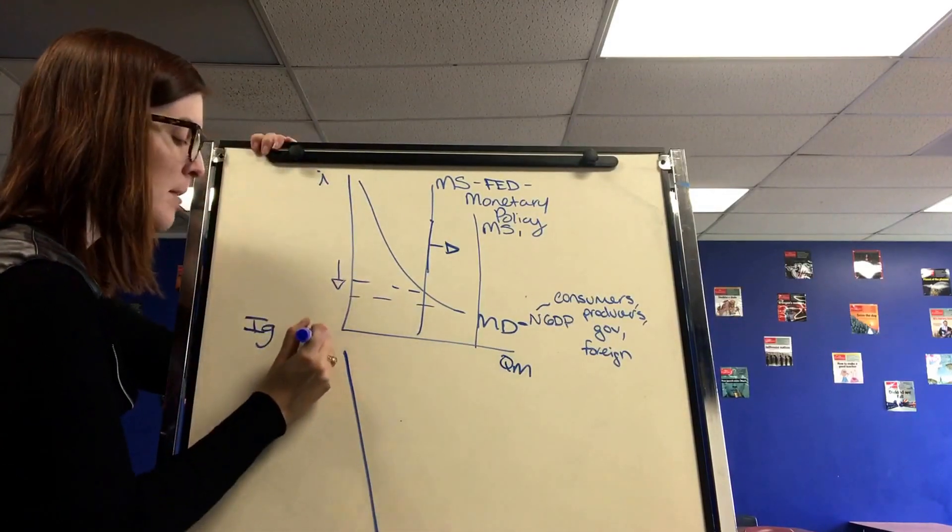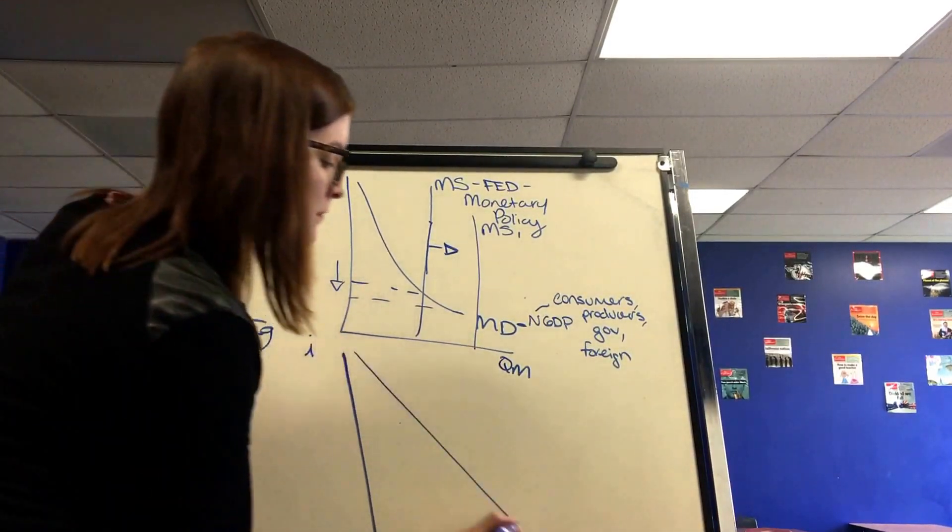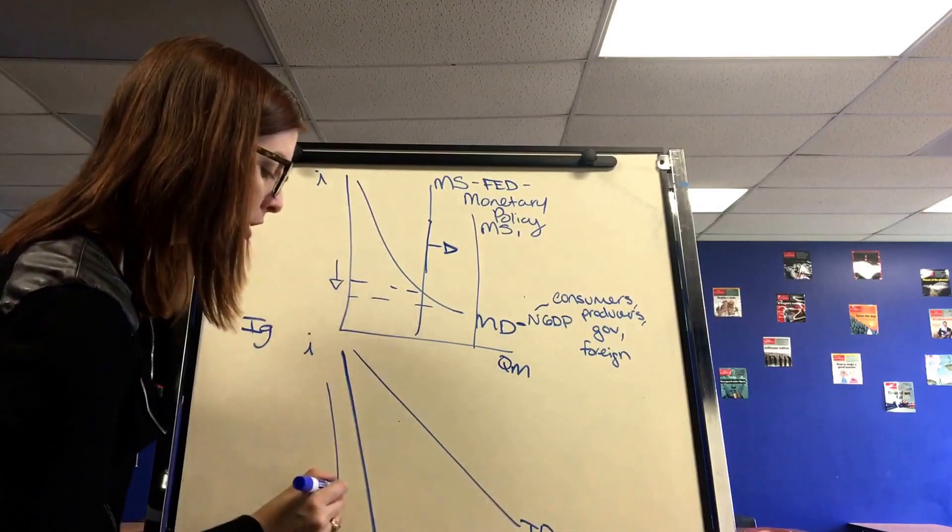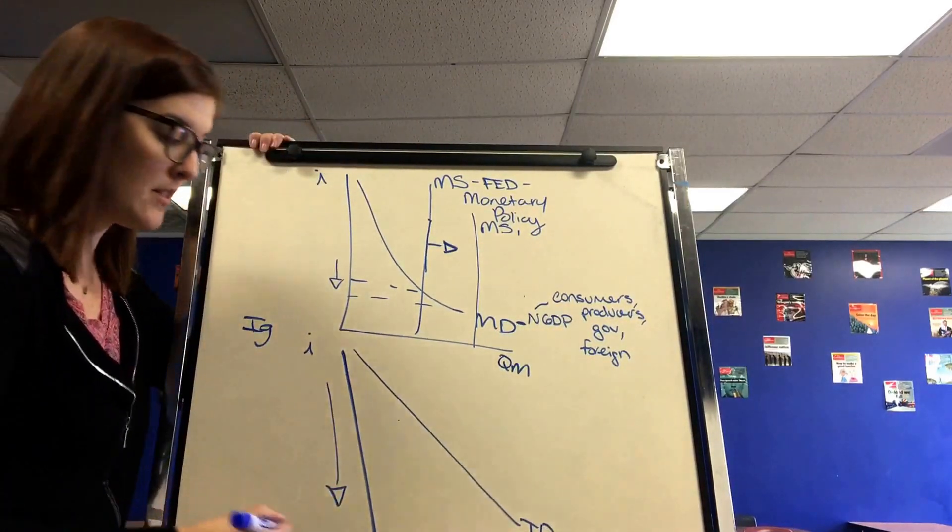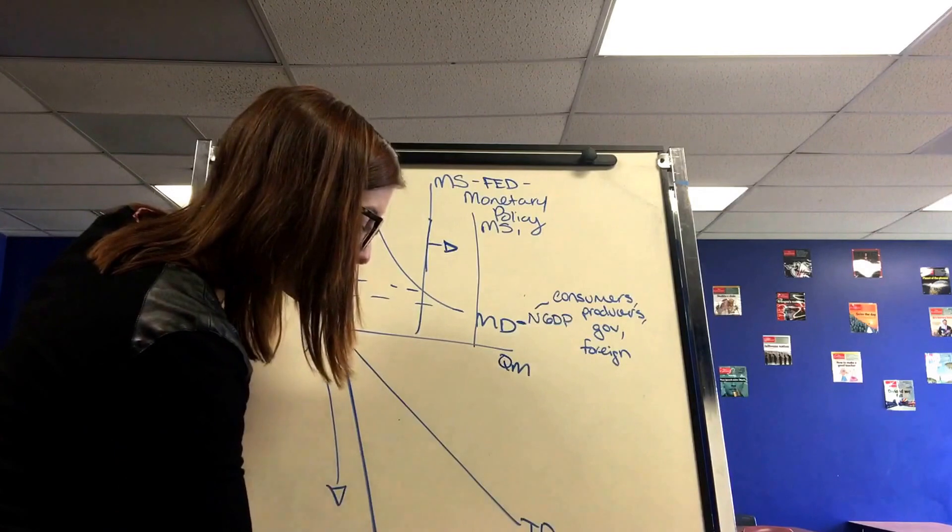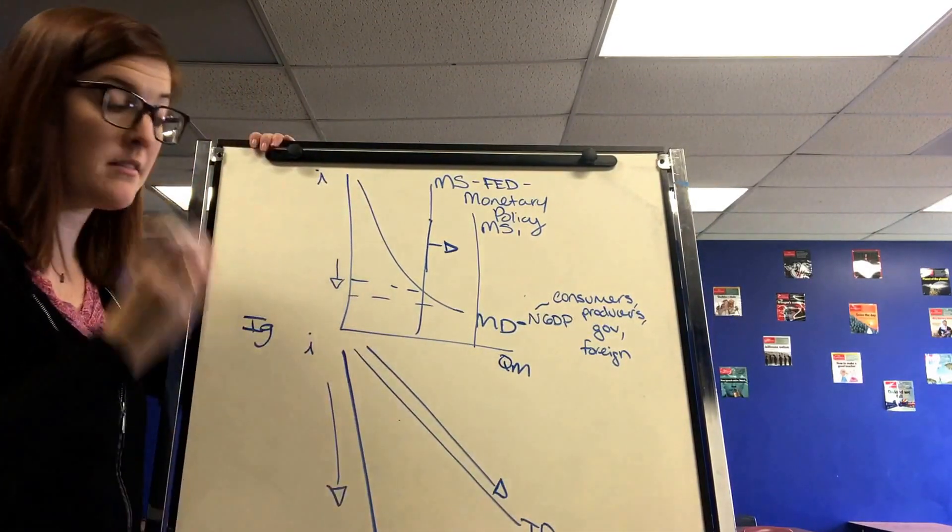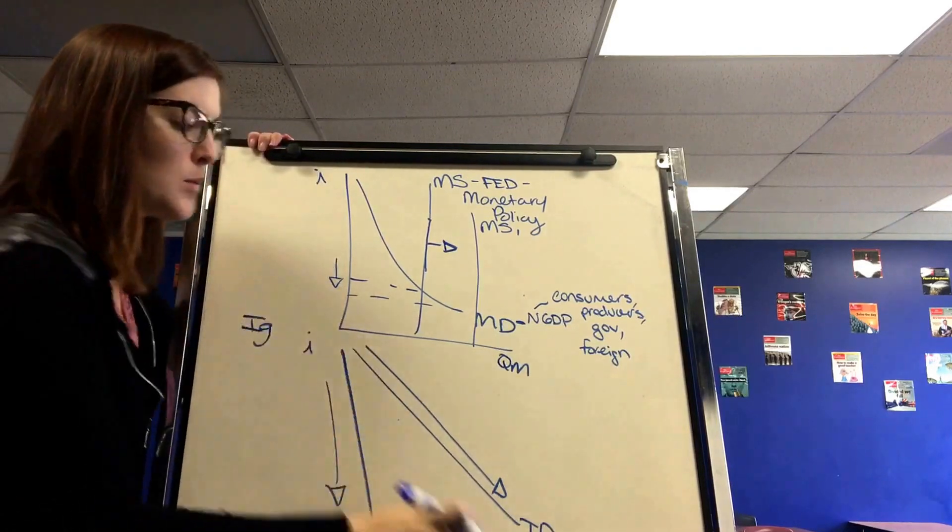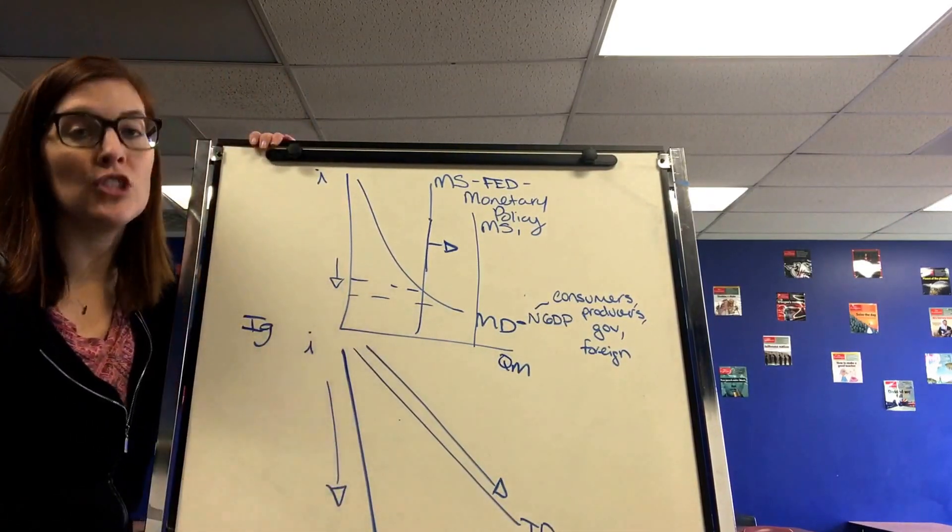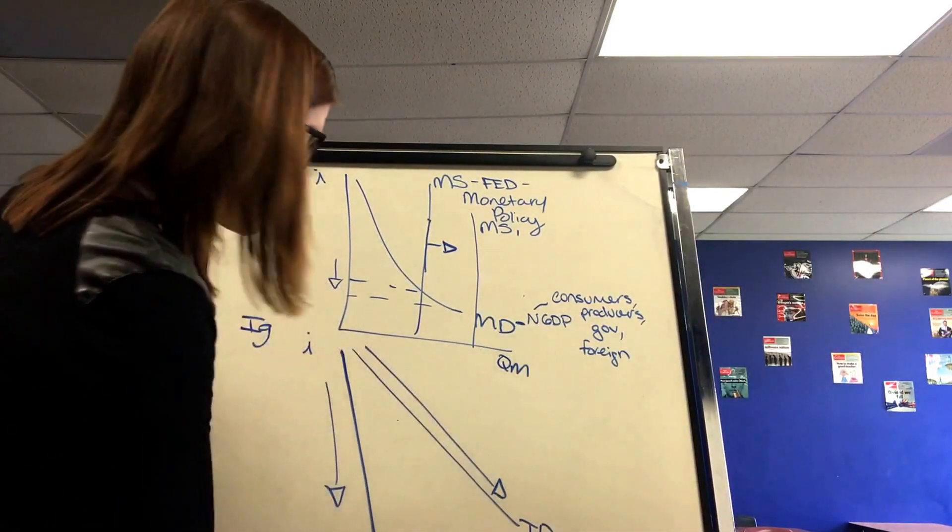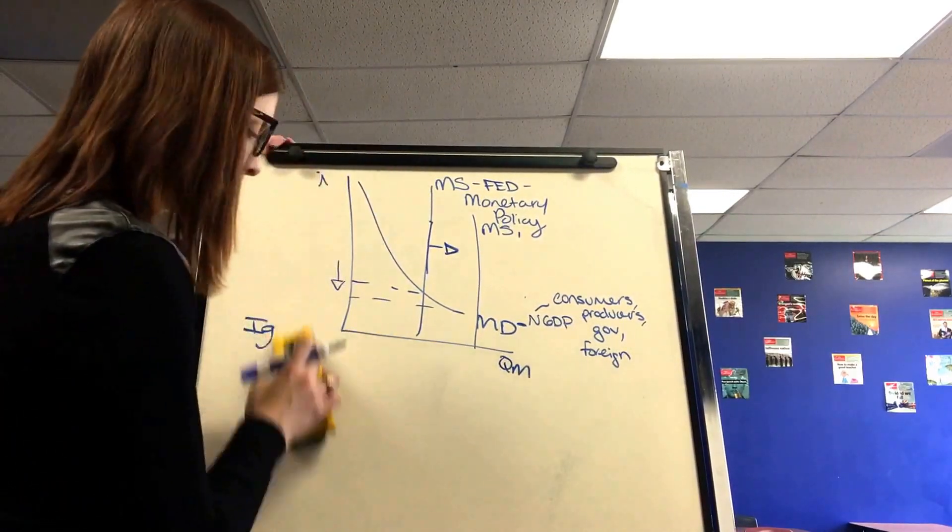So if I remember my investment demand graph, if nominal interest rates are lower, this is going to encourage gross private investment. So we will invest more and we show that as a movement down along investment demand. So the lower interest rates will increase the I of GDP.